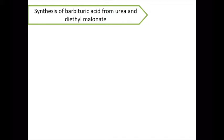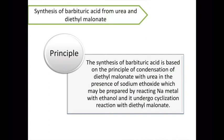Now we'll move to the synthesis of barbituric acid. In this synthesis, we are taking diethyl malonate and urea. The synthesis is based on a condensation reaction — the condensation of diethyl malonate with urea in the presence of sodium ethoxide, which is prepared by reacting sodium metal with ethanol.